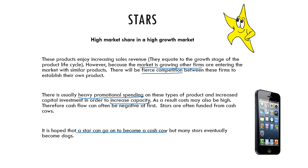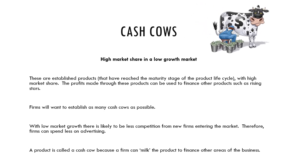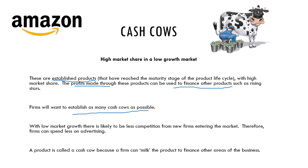The next category is cash cows. These are established products, probably in the maturity stage of the product lifecycle. A large amount of profit is made from these products, and hence cash cows can be used to finance other products such as stars or maybe problem children. You obviously want as many cash cows as possible. A good example might be Amazon, which has established itself as a key place to sell products and is making a large amount of profit.